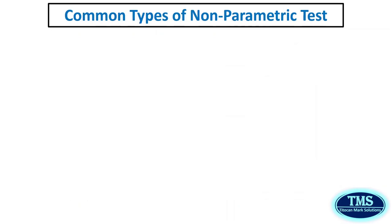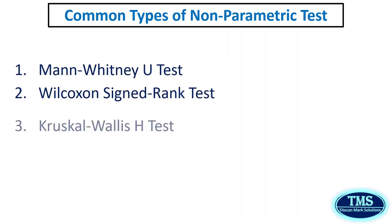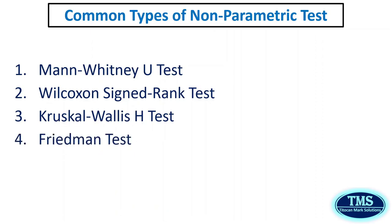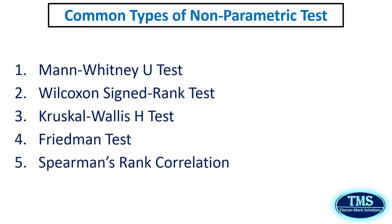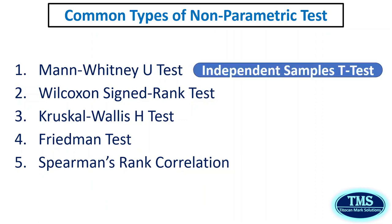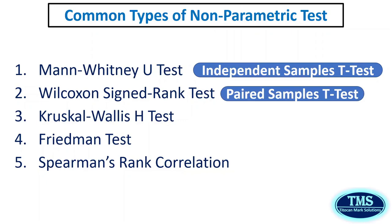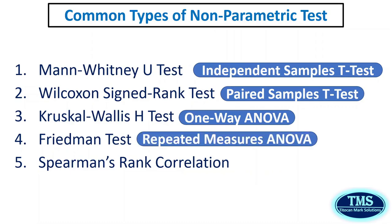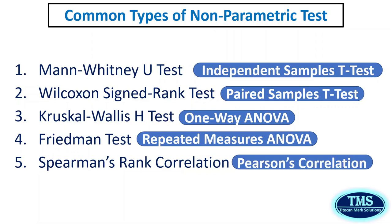Basically, there are five common types of non-parametric test statistics. They are: 1. Mann-Whitney U test, 2. Wilcoxon Signed-Rank test, 3. Kruskal-Wallis H test, 4. Friedman test, and 5. Spearman's Rank Correlation. In practical terms, these non-parametric tests serve as alternatives as follows: Mann-Whitney U test is alternative to the independent sample T-test; Wilcoxon Signed-Rank test is alternative to the paired sample T-test; Kruskal-Wallis H test is alternative to one-way ANOVA; Friedman test is alternative to repeated measures ANOVA; and Spearman's Rank Correlation is alternative to Pearson's correlation. Now let's take a look at each one to see what they are used for and their corresponding parametric alternative.